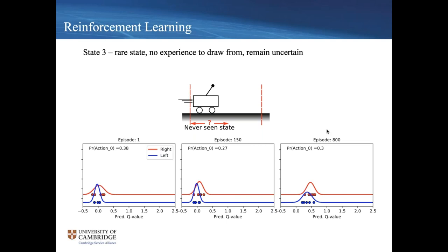The last state really validates the uncertainty estimates. We created inputs that were possible but very unlikely to occur during real training — the cart was near the edge of the boundary but moving very quickly toward the center, which you wouldn't normally expect to be generated much during training. At episode one both actions were uncertain, and even after episode 800, when the agent performed well and was confident about other states, it maintained quite a broad distribution here — remaining appropriately uncertain about actions it had rarely encountered.